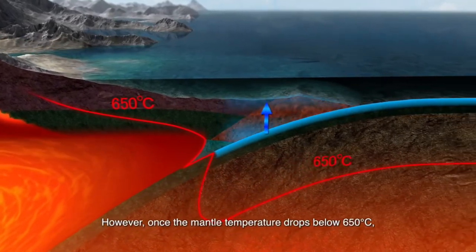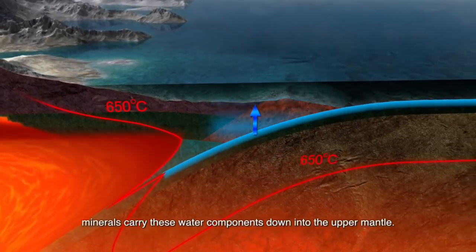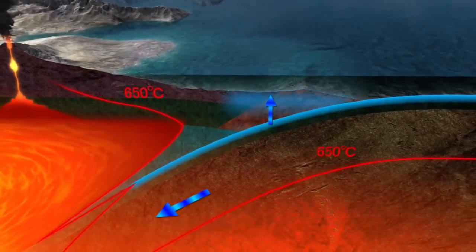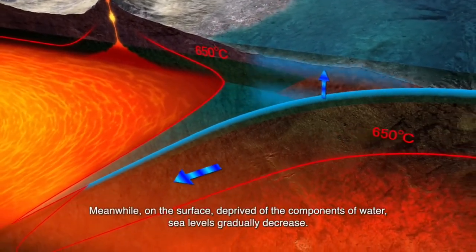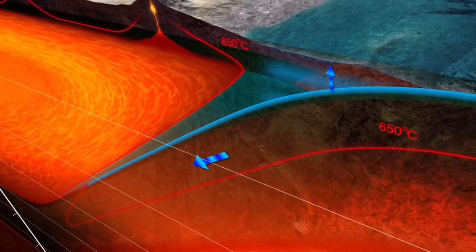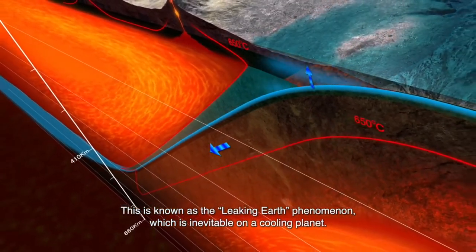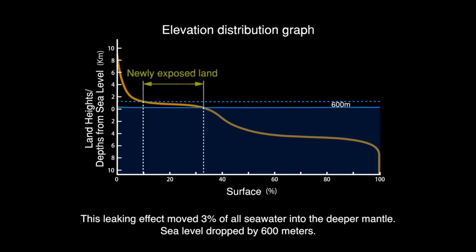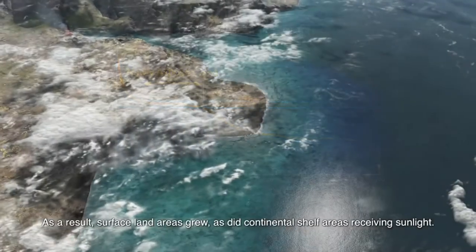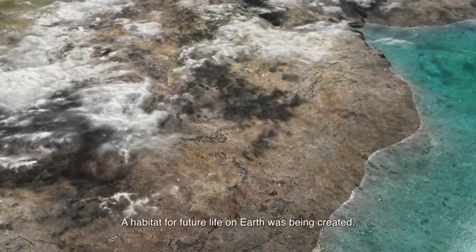However, once the mantle temperature drops below 650 degrees Celsius, minerals carry these water components down into the upper mantle. Meanwhile, on the surface, deprived of the components of water, sea levels gradually decrease. This is known as the leaking Earth phenomenon, which is inevitable on a cooling planet. This leaking effect moved 3% of all seawater into the deeper mantle. Sea level dropped by 600 meters. As a result, surface land areas grew, as did continental shelf areas receiving sunlight — a habitat for future life on Earth was being created.